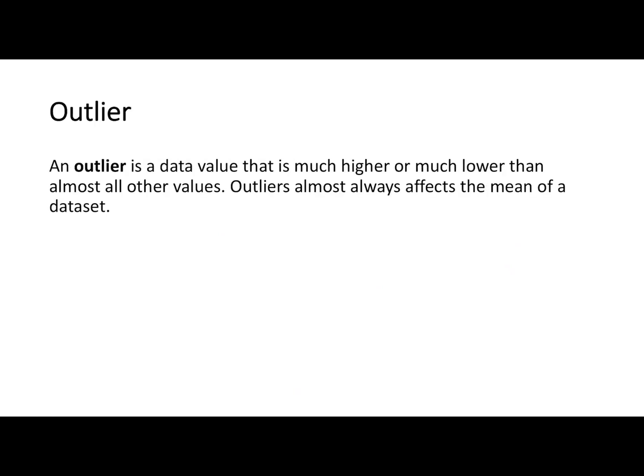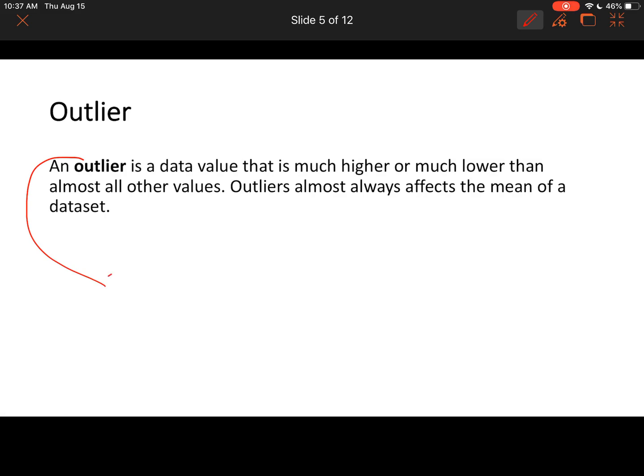We have what's called an outlier, which is extremely high or extremely low - it doesn't match the data set. It almost always throws off your mean. Outliers affect the mean and the standard deviation, and in some cases even the range. These statistics are often thrown off by outliers.